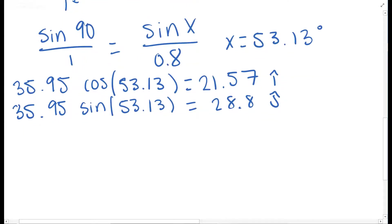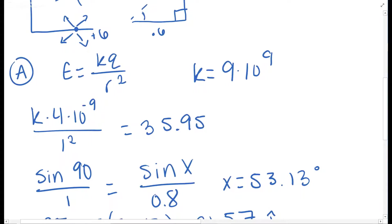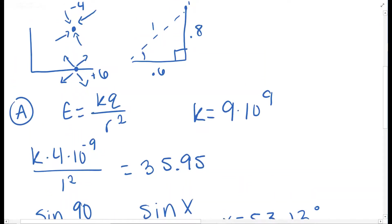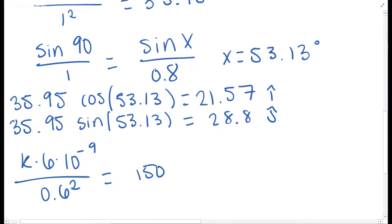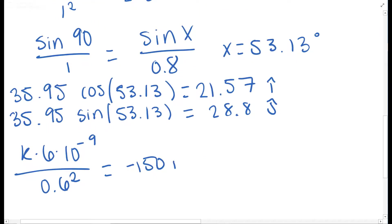Now we're going to do for Q2. K times 6 times 10 to the negative 9 over 0.6 squared is equal to about 150. This is in the i direction. However, Q2 is a positive point charge, so it points out. So it's actually pointing to the left, so it's going to be negative. It is still in the i direction.